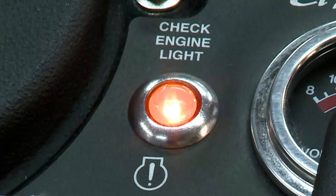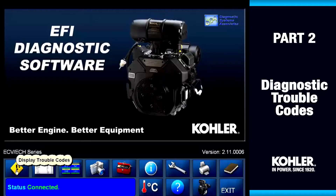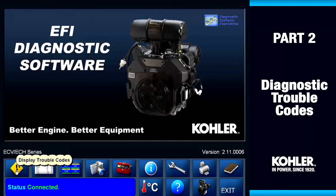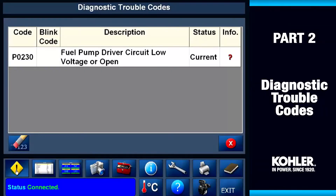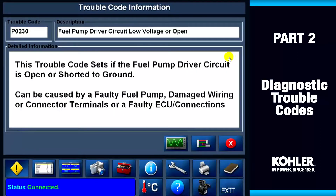If the MIL goes on and stays on, the trouble code is identified as current. Both types of codes are stored in the engine's computer memory. Select the trouble code button to display any stored codes. We're looking at code P0230 — that's the fuel pump circuit — and the code status is current. Click the red question mark in the info column to define this code.